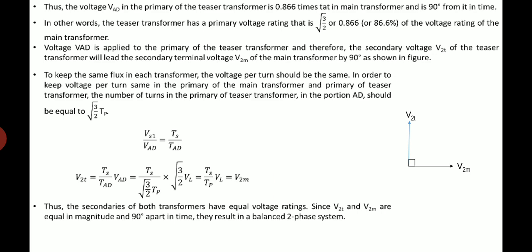In other words the teaser transformer has a primary voltage rating that is root 3 by 2 of the voltage rating of main transformer. The voltage VAD is applied to the primary of teaser transformer and therefore, the secondary voltage V2T of the teaser transformer will lead the secondary terminal voltage V2M of main transformer by an angle of 90 degree which is shown in this phasor diagram.